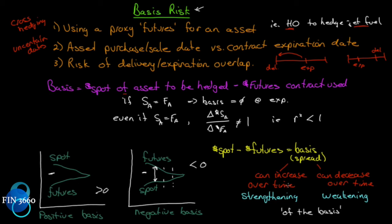If the basis is increasing over time, it's referred to as a strengthening of the basis — that's not a good thing for any hedge. If it's decreasing over time, it's called a weakening of the basis. Here's why: since the basis is the source of risk, we want that risk to decrease over time. Think of it like golf versus baseball — with the basis, we want the lowest score possible. A weakening of the basis is always good; a strengthening is always bad. That's basis risk in a nutshell.